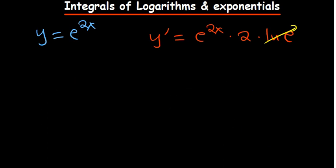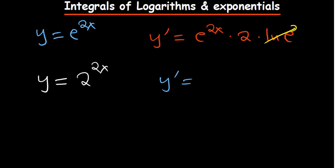How about the case where y = 2^(2x)? For the derivative y′, we maintain 2^(2x), then multiply by the derivative of the power, which is 2, and then the natural log of the base — which is natural log of 2.